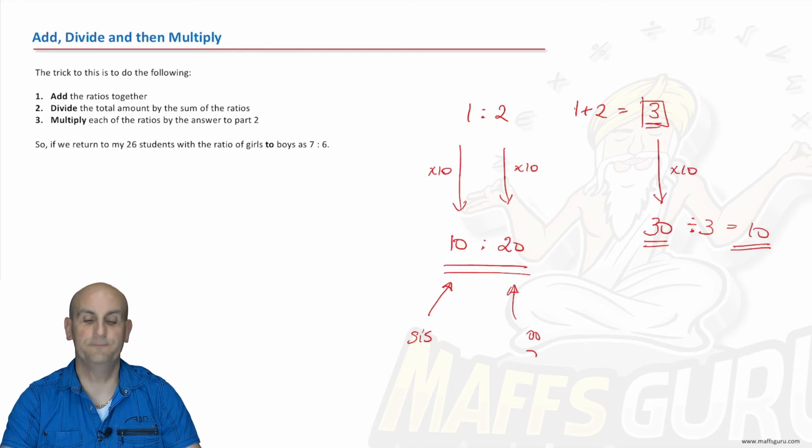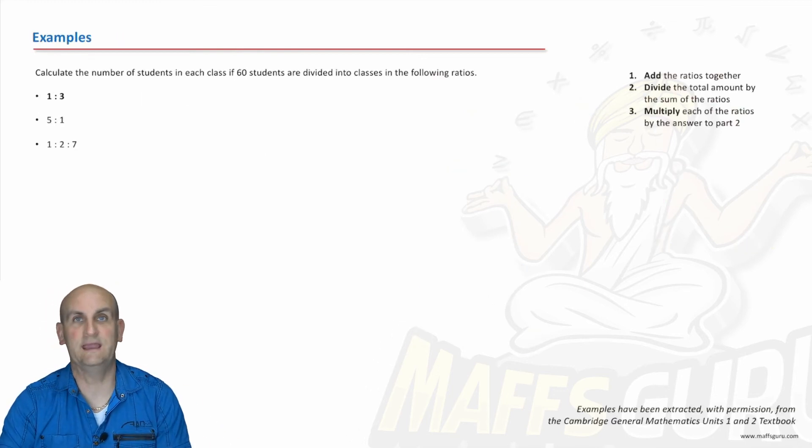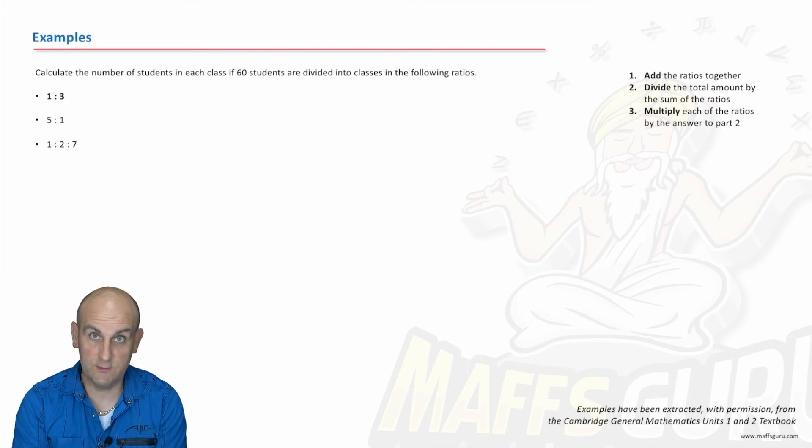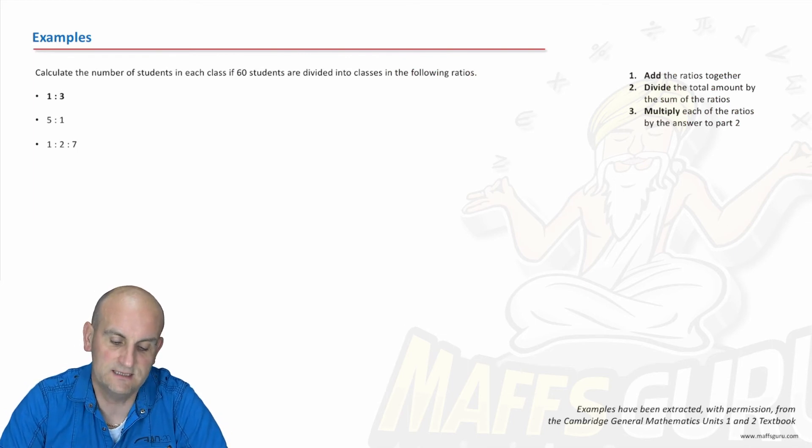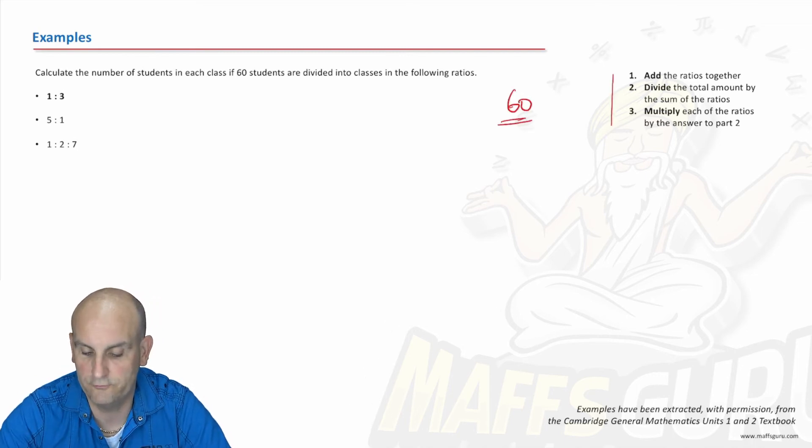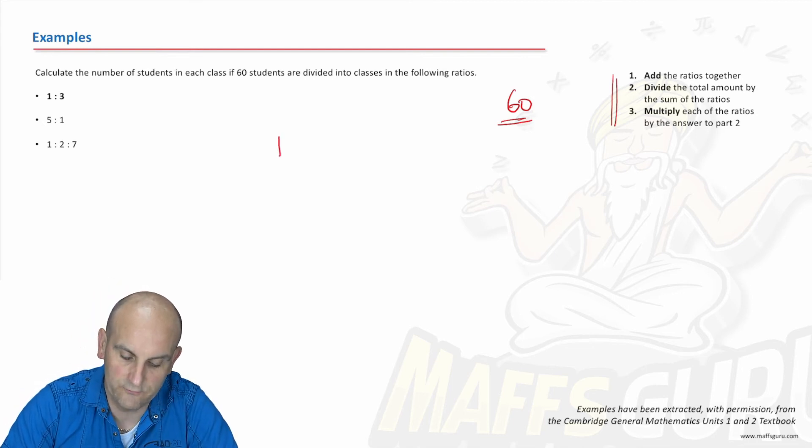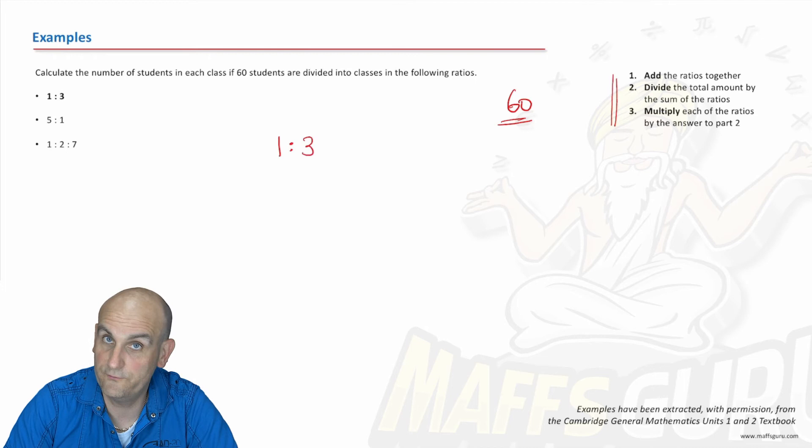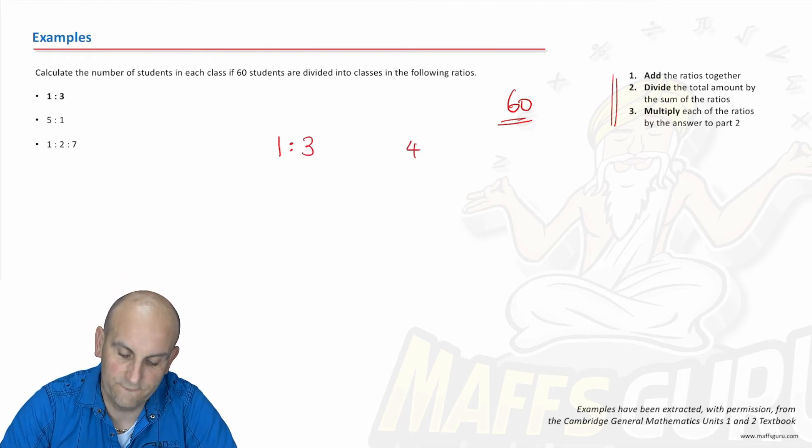So how do we apply this? I've got a number of questions just to show you again and again. Of course, watching me do it is great, but there are hopefully questions that you can practice on as well. So here we go. Calculate the number of students in each class if 60 students are divided in the following ratio. So we have 60 students, that's my total amount, and I've got the rules written down here to help us do this. So first things first, I've got the ratio of 1 to 3. What's the first thing we do? We add them together. So 1 plus 3 gives me 4.